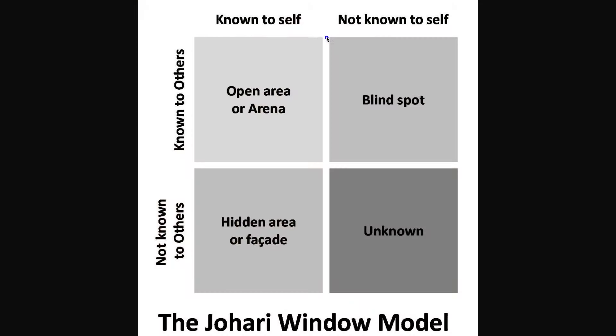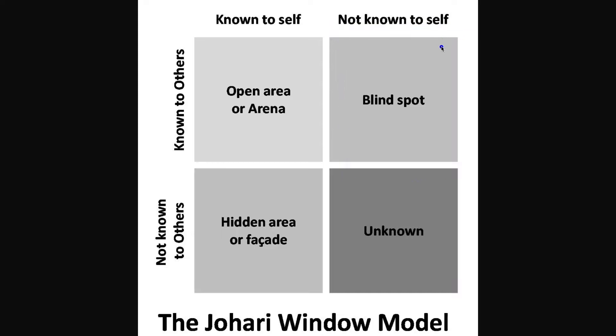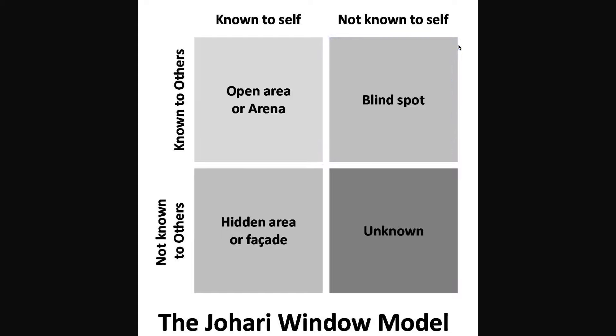What you know and what a Zoho implementation partner knows is called the open area or arena. You can think of this as documented requirements — something you want to accomplish with Zoho and something I understand how to do. I'm a white belt in your organization and you're a white belt in Zoho, but I'm a black belt in Zoho and you should be a black belt in understanding your organization. The more information you can move into the open area, the better.